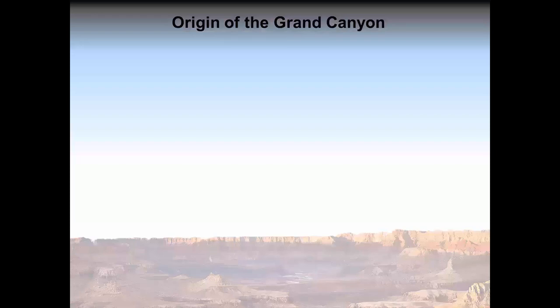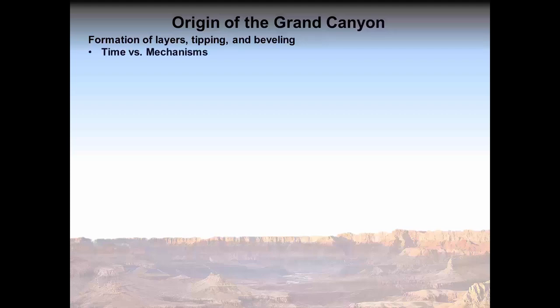Any theory of the canyon's formation must first explain the formation of the exposed layers, what caused some to tip at an angle, and what forces or mechanisms caused tipped layers to become beveled cleanly along a nearly horizontal plane. Do the layers simply represent vast time according to uniformitarian principles of superposition, or do they represent other physics-based phenomena?